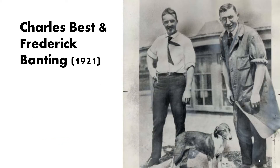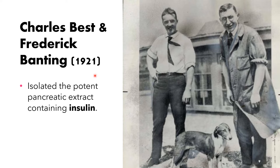Another historical figure in the field of endocrinology is Charles Best, and Sir Frederick Banting, his professor. They demonstrated that the islets of Langerhans in the pancreas produce a substance that lowers blood glucose. Sir Frederick Banting, Charles Best, and their colleague John McLeod at the University of Toronto in the year 1921 were credited for the discovery of the hormone insulin from the pancreas.